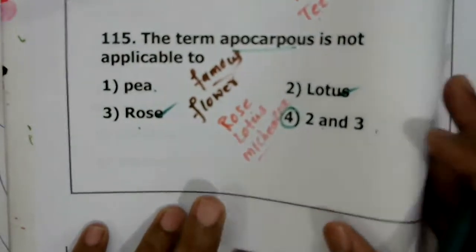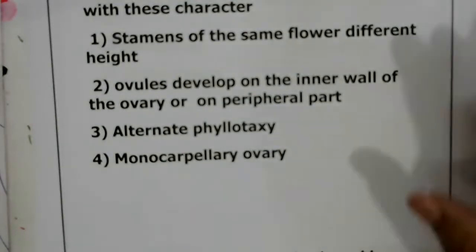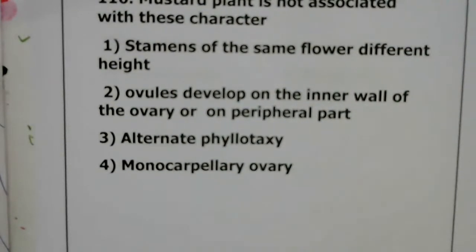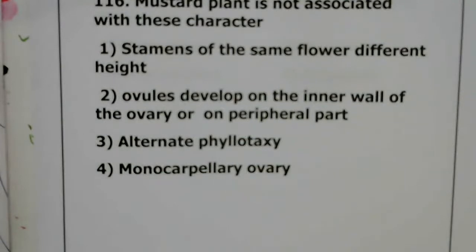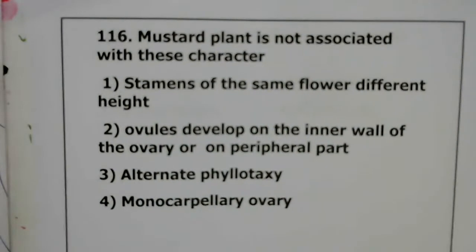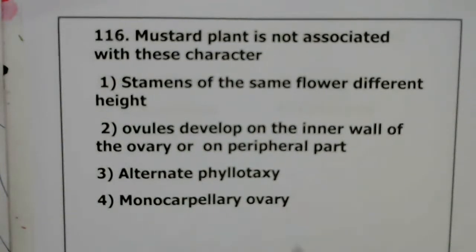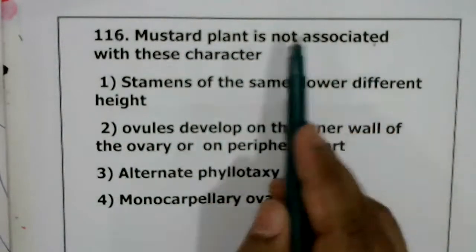Regarding the doubt on DPD: in a turgid cell, DPD (diffusion pressure deficit) is zero. This is because in a turgid cell, osmotic pressure and turgor pressure become equal, so DPD equals zero.